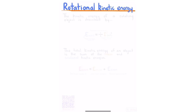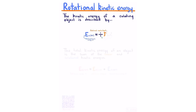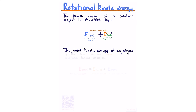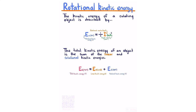Rotational kinetic energy. The kinetic energy of a rotating object is: EK-rot equals ½ times rotational inertia times angular velocity squared. This mirrors the linear kinetic energy equation EK equals ½mv². The total kinetic energy of an object is the sum of linear and rotational kinetic energies: EK-total equals EK-linear plus EK-rotational.